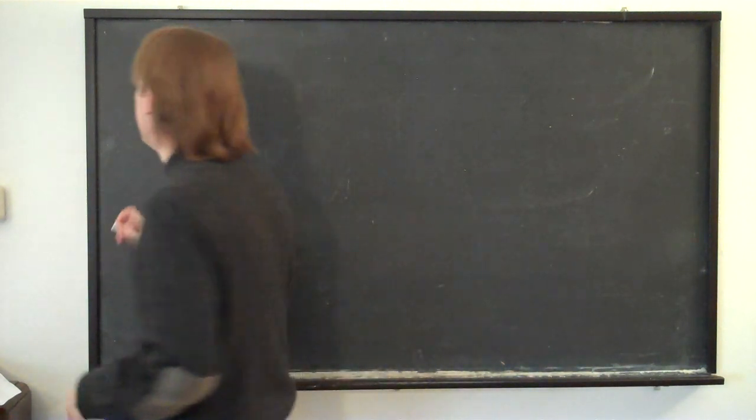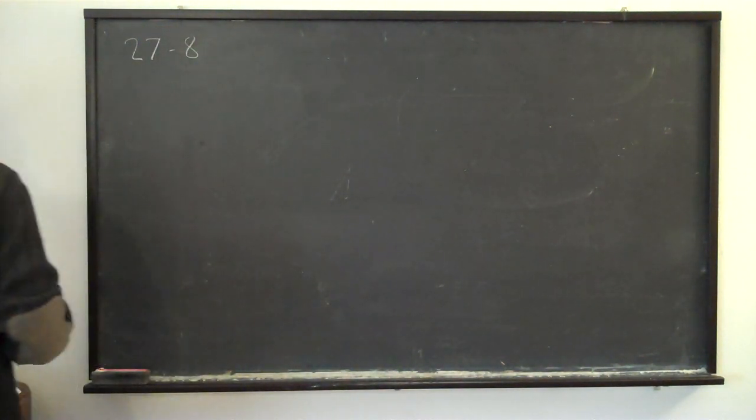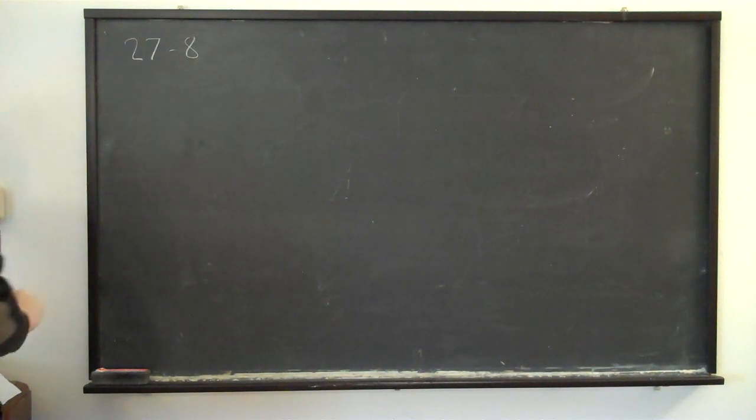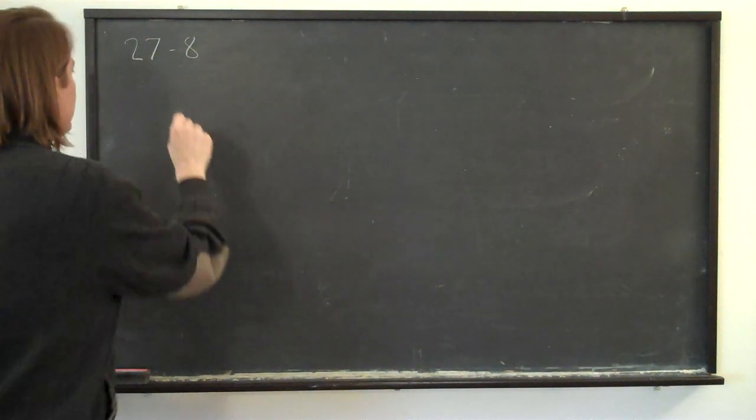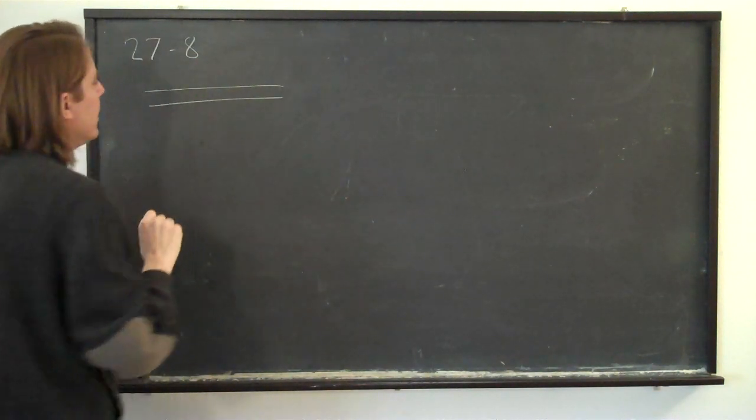This is problem 27.8. An electric current is passing through a wire that's a time-varying electric current.